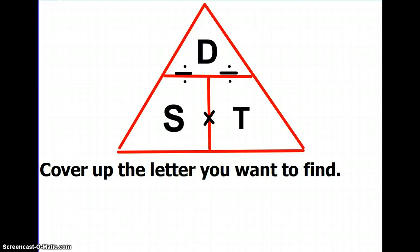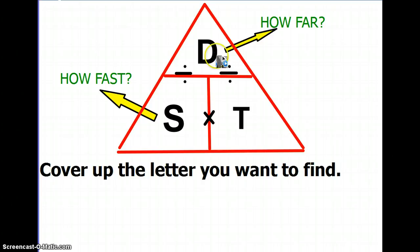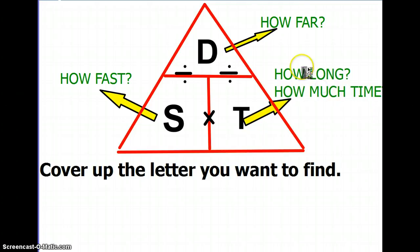Here's a really easy way to use something that we call the DST triangle to manipulate the speed formula. Because sometimes we'll ask you for speed. Sometimes instead of saying what is the speed, they might ask you how fast did the object go. Sometimes they might ask you to find the distance and they may not say distance, they might say how far did the object go. Or the question might ask you to find the time it took the object to go that distance, in which case they may say the words how long or how much time did it take.